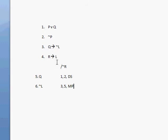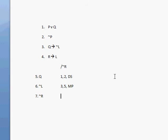That's how I got not L. Now with not L, what else can I do? I see a modus tollens here. Line 4 says if you have R, then you have L. If you don't have L, then you have not R. And that's the conclusion we wanted. The last thing we need to do is justify how we got that conclusion: lines 4 and 6, modus tollens.